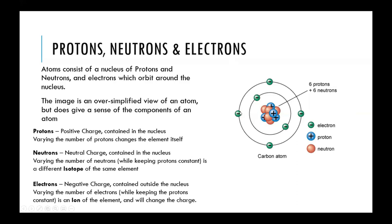An atom can exist that has one extra electron. If it was neutral and you added one negatively charged electron, the whole charge would be negative. Likewise, you could take an electron away, and now there would be too few electrons to balance out with the positive protons, and the overall atom would have a positive charge. These elements with differing numbers of electrons are called ions.